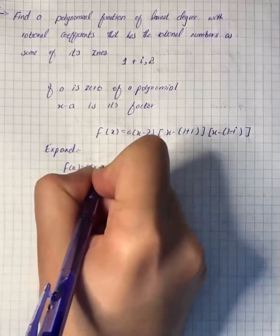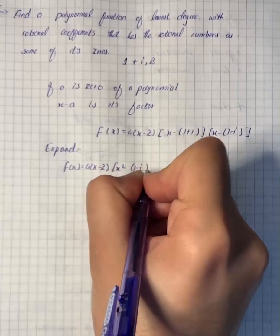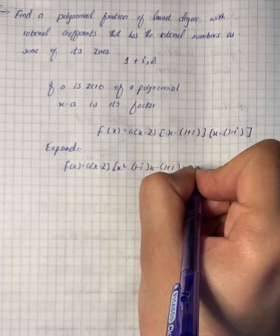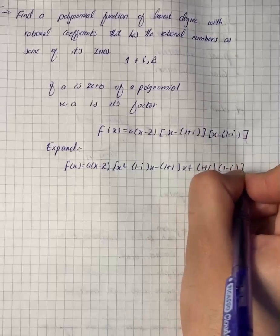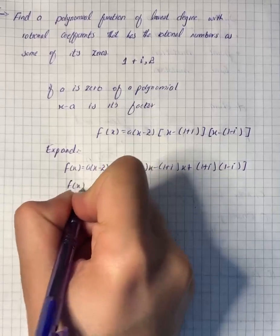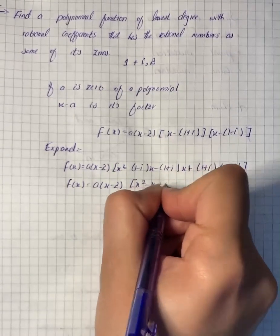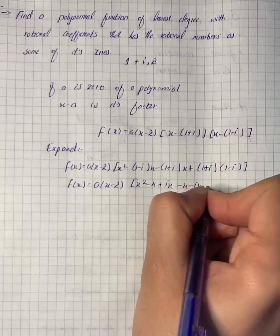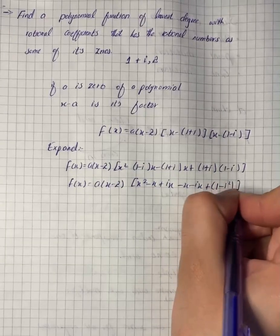Equals to a into x minus 2 into x squared minus (1 minus i) into x minus (1 plus i) into x plus into 1 plus i, 1 plus i into 1 minus i into 1 plus i into 1 minus i squared.